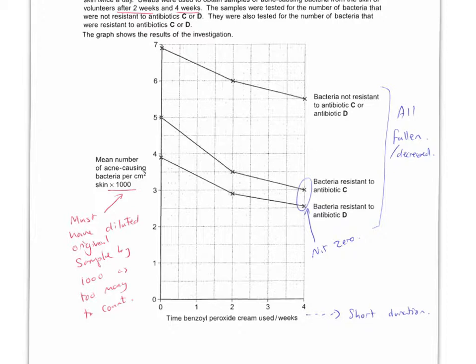Okay, so a bit of an evaluation. Does the data support the statement? Benzoyl peroxide reduces the number of antibiotic resistant bacteria on the skin. So, yes. Because both of them fall. Both of these have fallen. No, because you've still got some left after week four. They've not reached zero. Also, you don't have any data beyond week four. So you cannot see if this continues long term. Or if it would reach zero, let's say after 10 weeks.